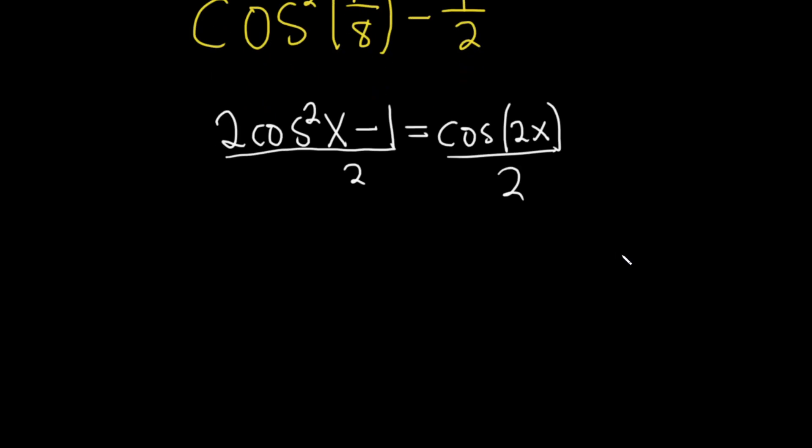And then what happens is you end up with 2 cosine squared over 2, which is just going to be cosine squared x, I'll skip a step, minus and then 1 over 2. And that's equal to, and I'm going to write this as 1 half cosine 2x.